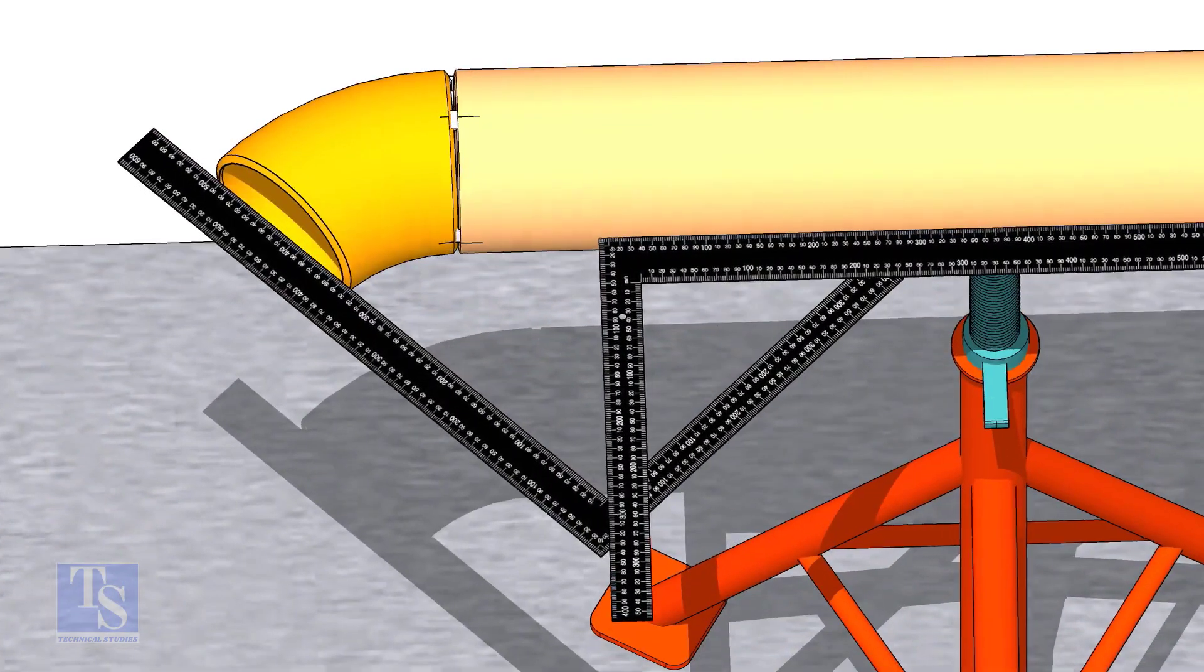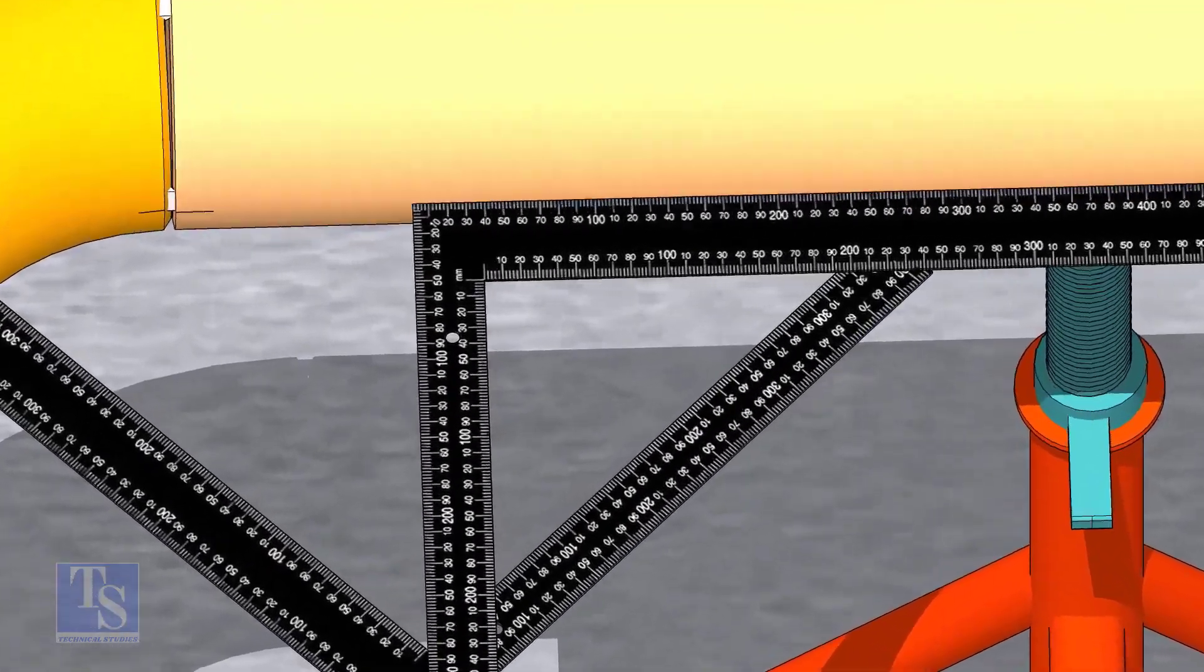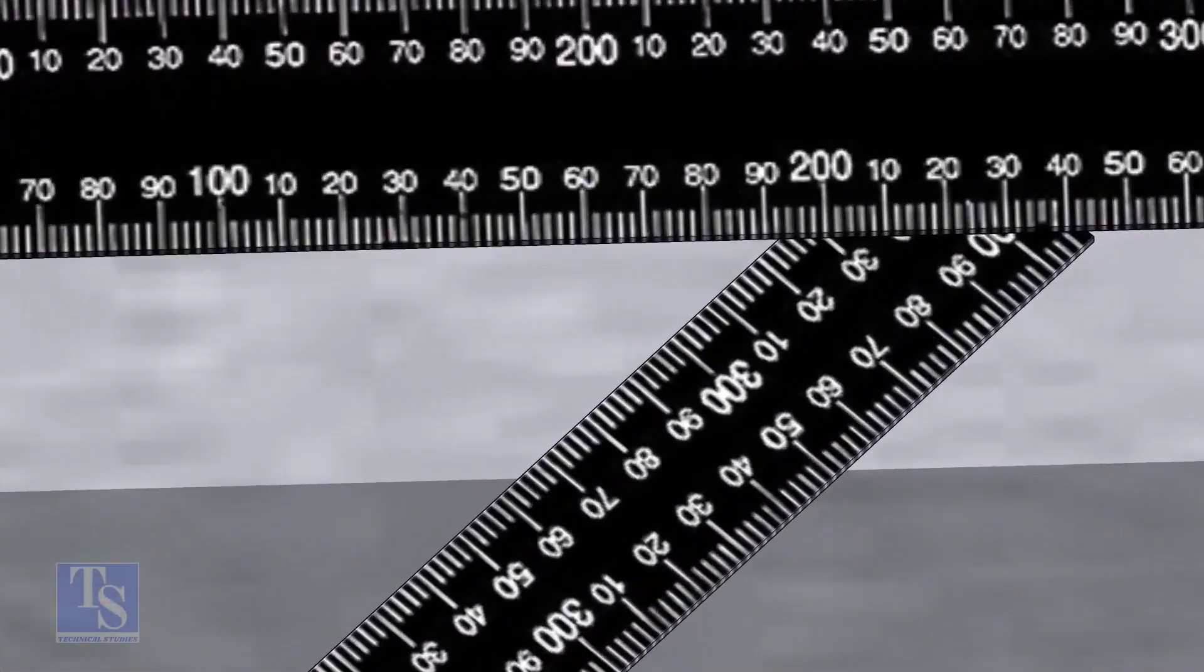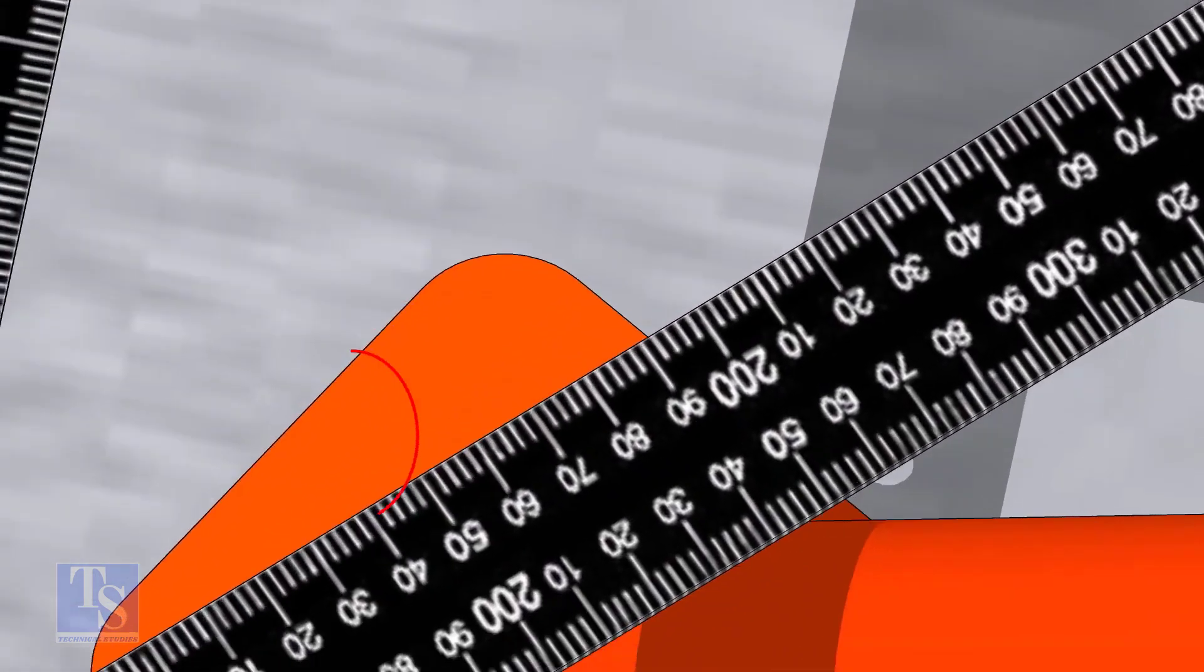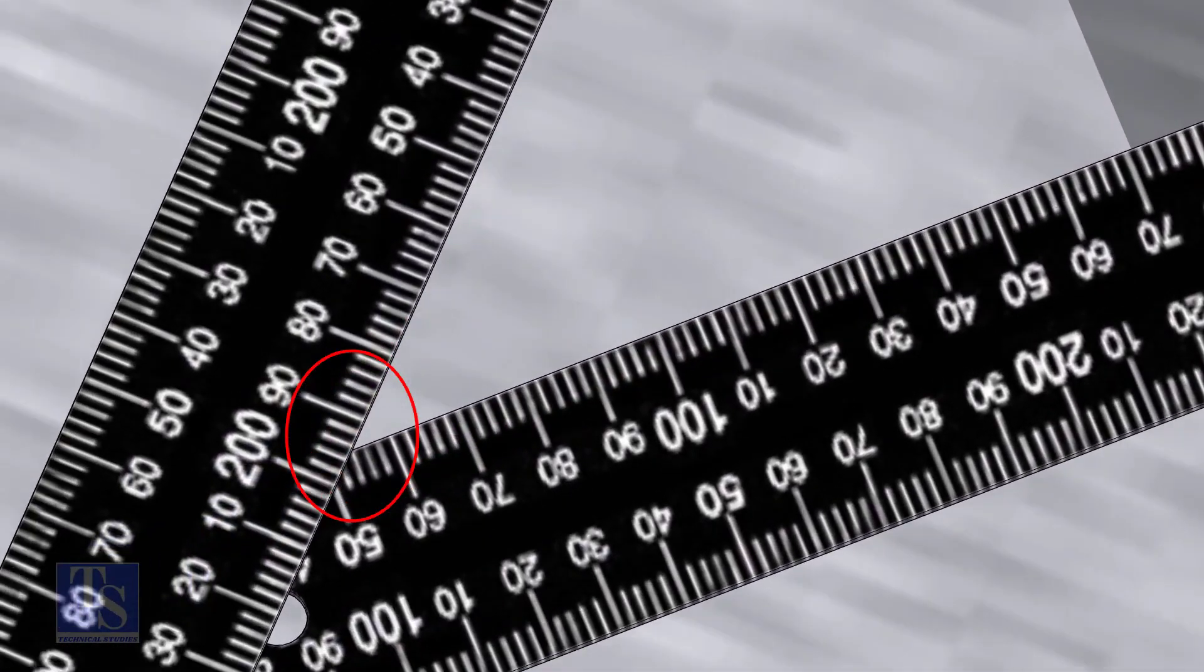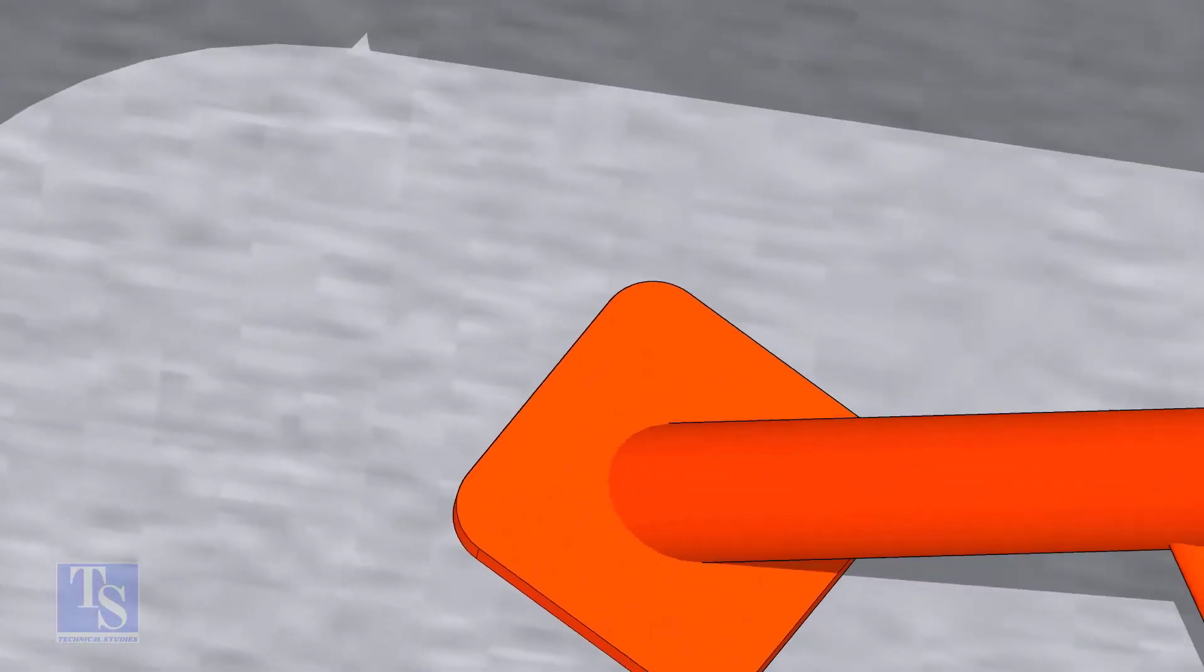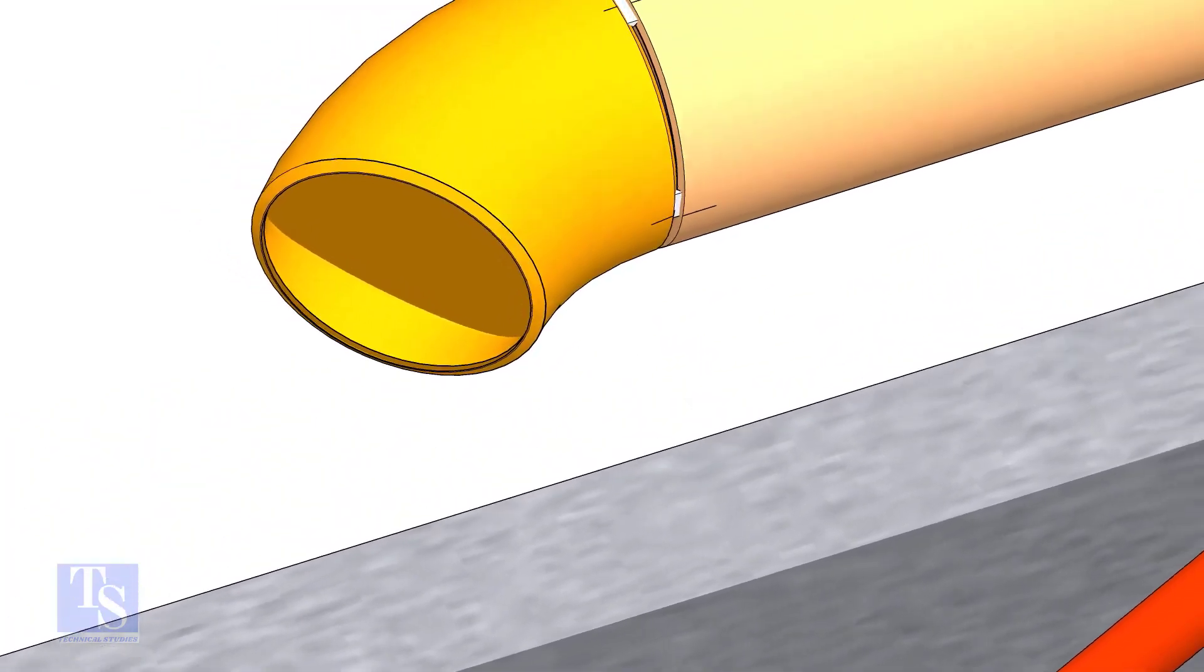Note the level of the pipe. Note down the readings. If both readings are the same, the elbow face is exactly 45 degrees to the pipe.